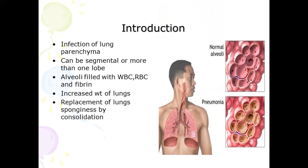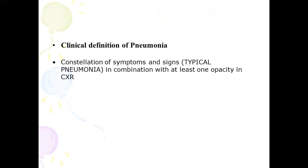In pneumonia, the alveoli are affected and filled with WBCs, RBCs, and fibrin, which leads to increased weight of the lungs and replacement of lung sponginess by consolidation. Moving on to the clinical definition: a patient is said to have pneumonia when there is a constellation of symptoms and signs combined with at least one opacity on chest X-ray. To confirm pneumonia, you must order a chest radiogram, and there must be consolidation, either homogeneous or non-homogeneous.